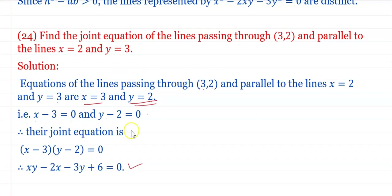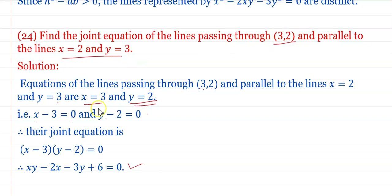Their joint equation is (x − 3)(y + 2) = 0, which simplifies to xy − 2x − 3y + 6 = 0. This is the required joint equation of lines passing through (3, −2) and parallel to x = 2 and y = 3.